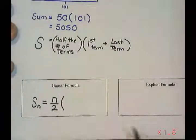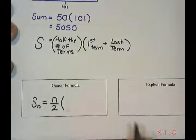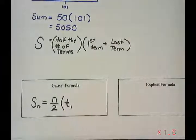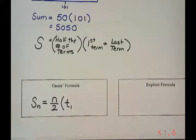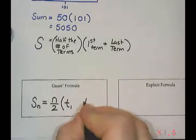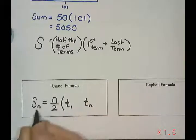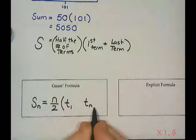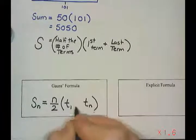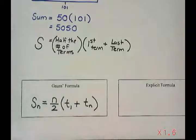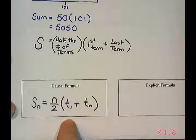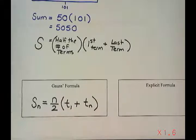And then that's going to be times the first term. The first term would be term 1. And the last term would be Tn. So if we were doing 10 terms it would be term 10, or 100 terms it would be term 100, and we just add those together. So this is one of the formulas that we can use to calculate the sum of an arithmetic series.